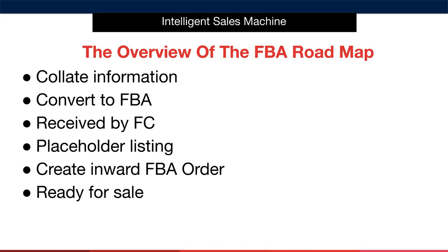To give you an overview, which you can see on the screen: firstly, we collate all the information required to complete a placeholder listing. Having all the information to hand makes the process so much easier rather than having to go and find each piece as the request is presented to you. Then we actually install a placeholder listing by using the collated information and inserting it into the correct areas to allow the Amazon catalogue to process the request and create your first listing.